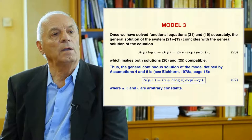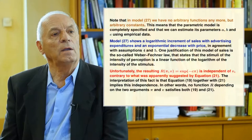Model 3 combines Assumptions 4 and 5, solving the system of equations 19 and 21 by forcing both general solutions to be identical, yielding functional equation 26. The general continuous solution, as given by Eichhorn (1978, page 15), is the S function in expression 27, where A, B, and C are arbitrary constants. With no arbitrary functions but only constants, the parametric model is completely specified and its parameters can be estimated from empirical data. Model 27 shows a logarithmic increment of sales with advertising expenditures and an exponential decrease with price, justified by the Weber-Fechner law.